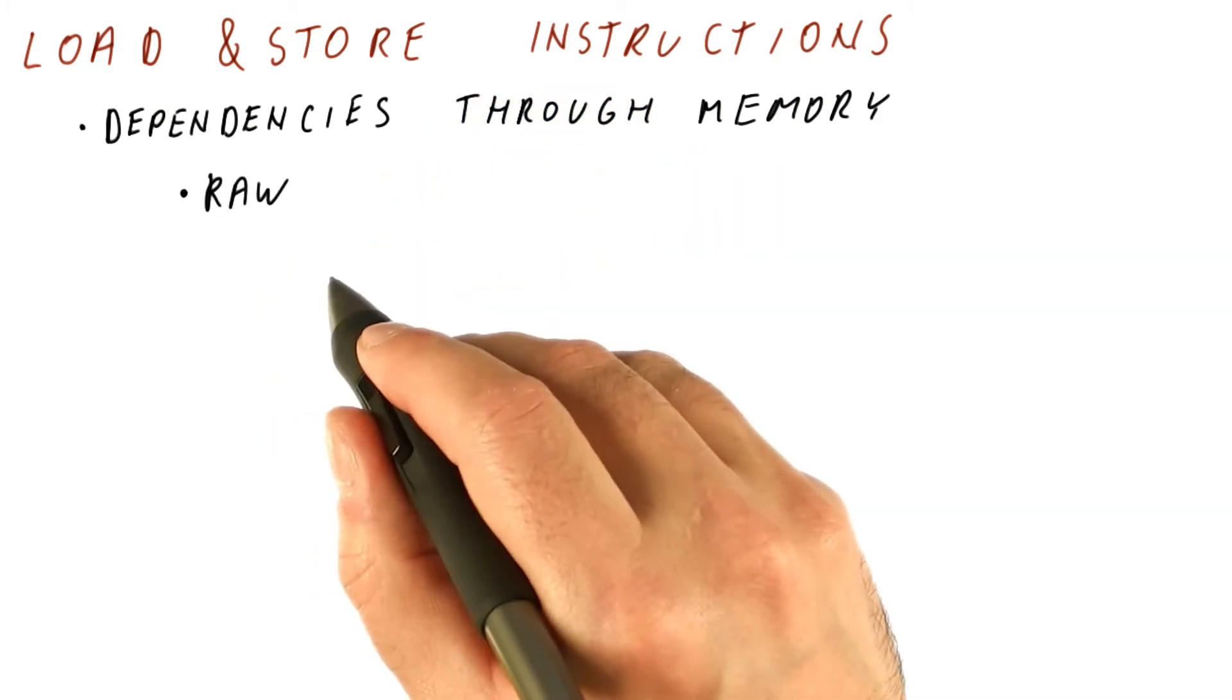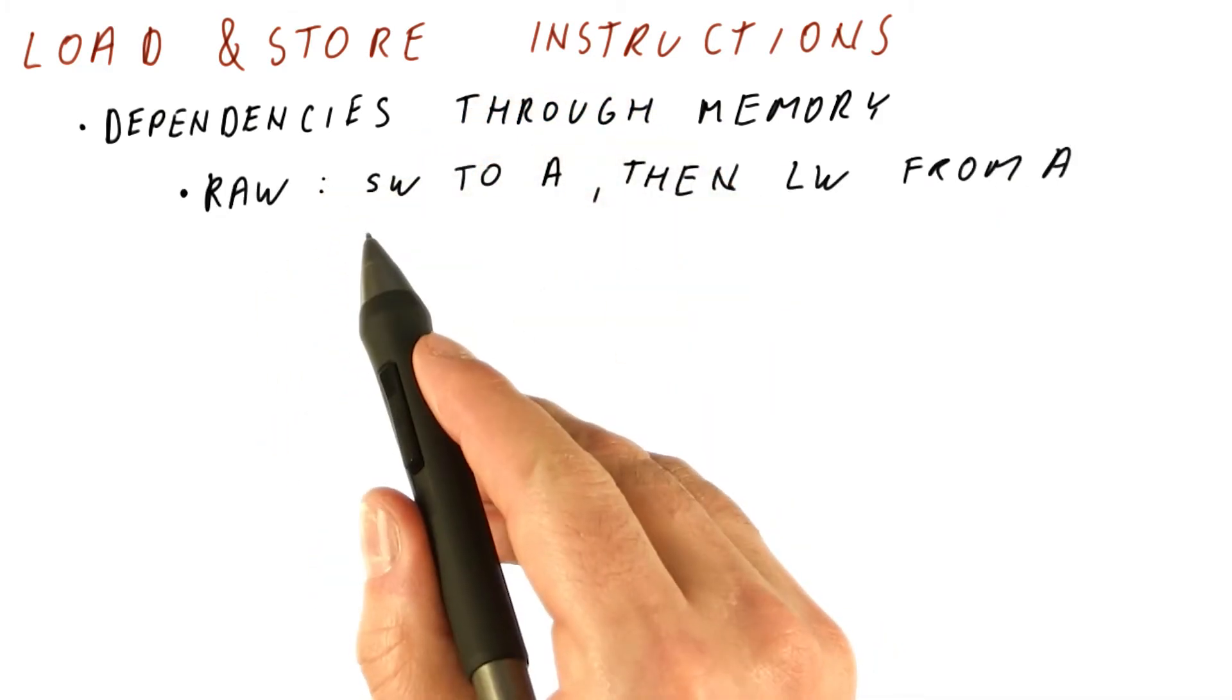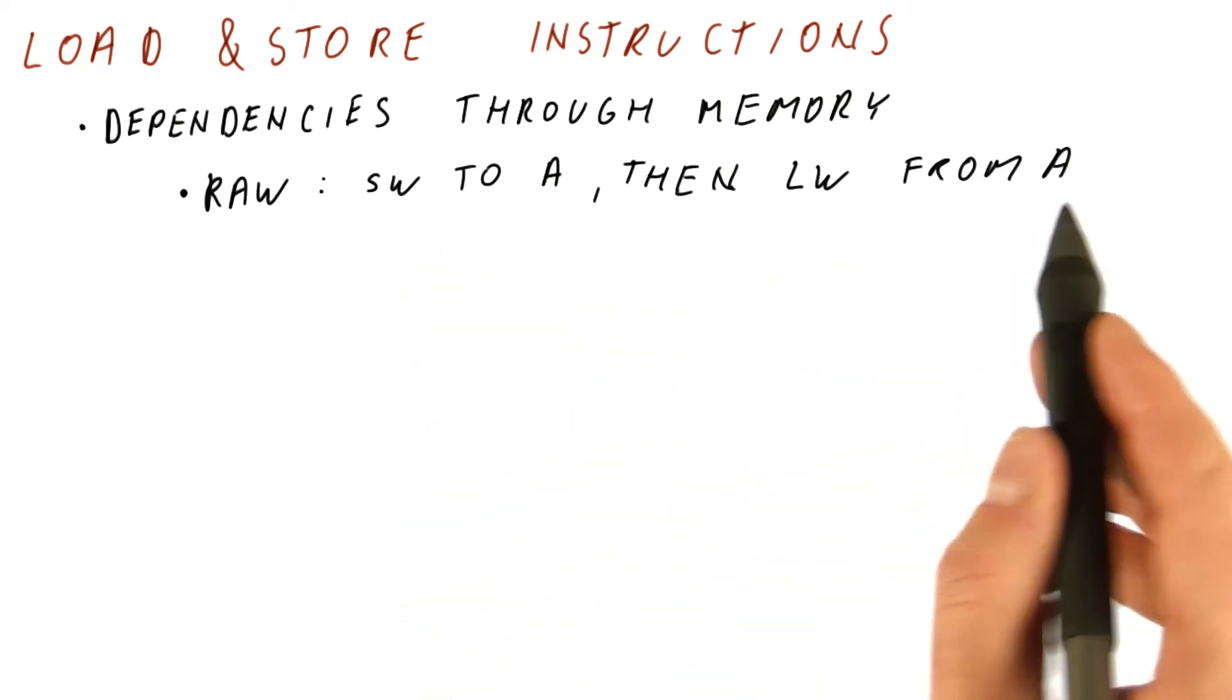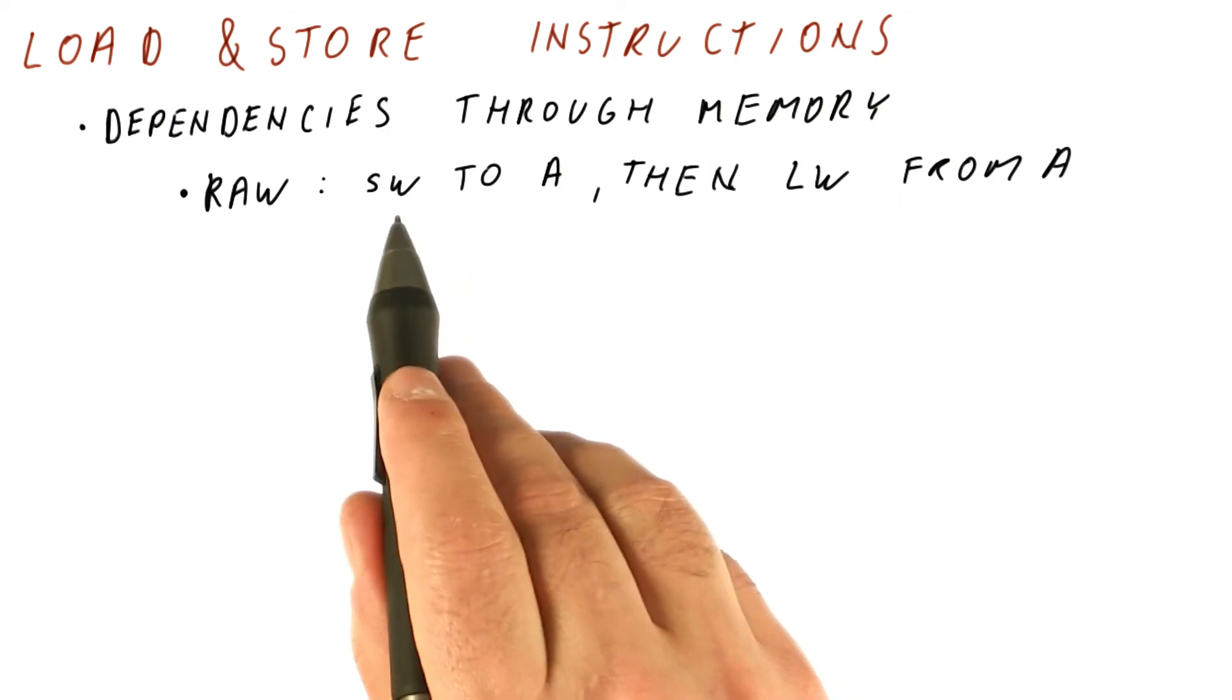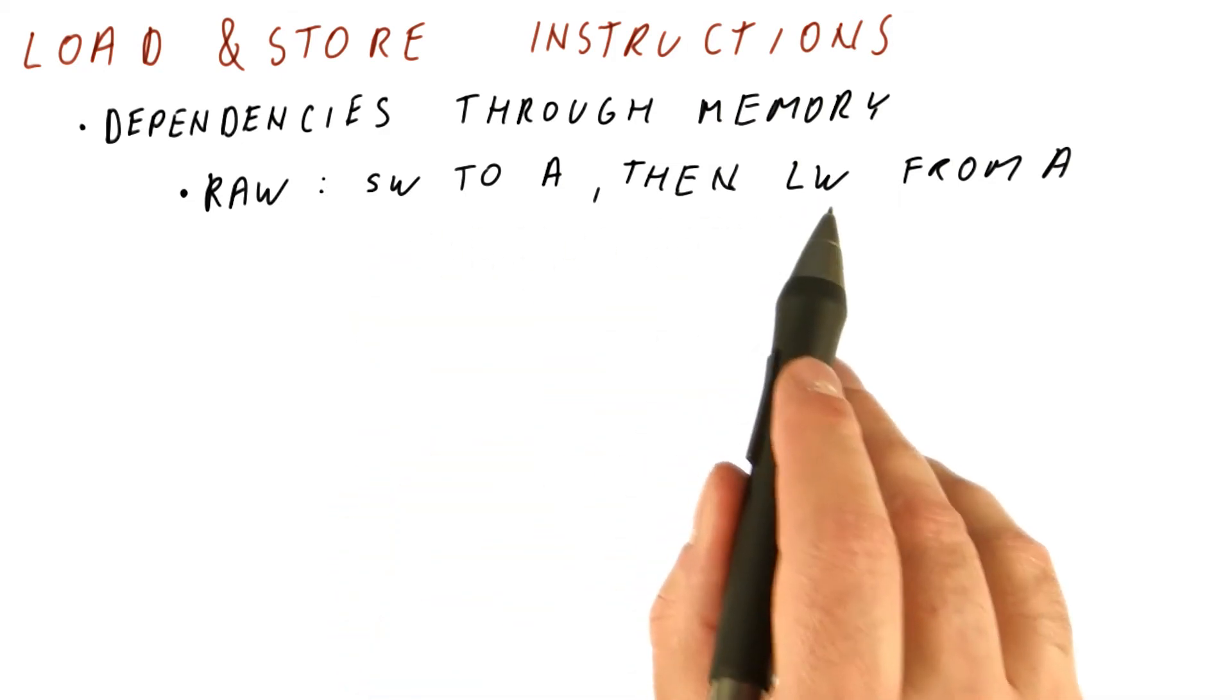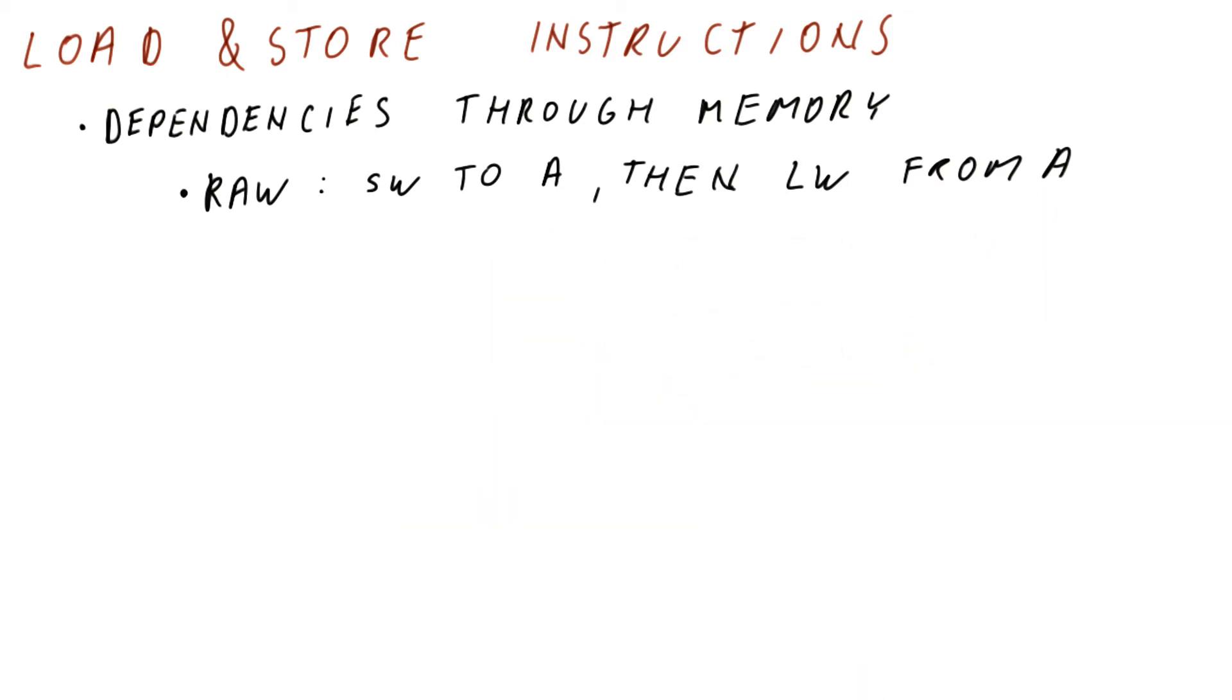A read-after-write dependence occurs if there is, for example, a store word to some address in memory and then we do a load word from that address. There is definitely a read-after-write dependence between the store and the load. The load uses the value put there by the store.